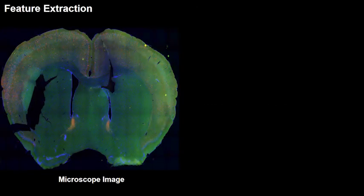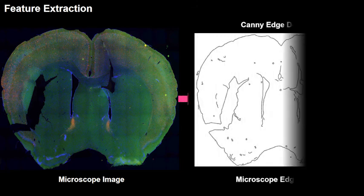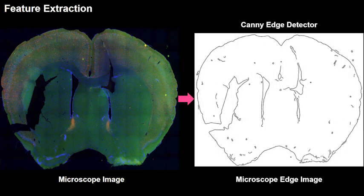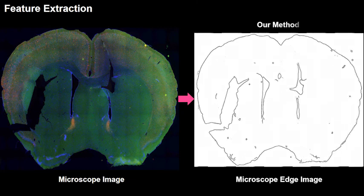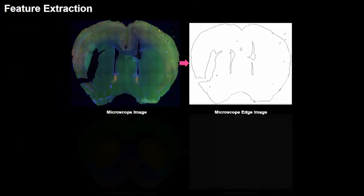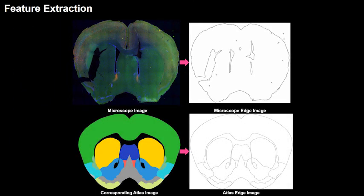The first step of registration involves extracting features or contours from the input images. A traditional canny edge detector produces a lot of spurious edges and fails to generate clean contours. Using our dominant edge detection algorithm, we identify and remove these small spurious edges to generate clean microscopic edge images. A similar procedure extracts the atlas edge image from the corresponding atlas image.